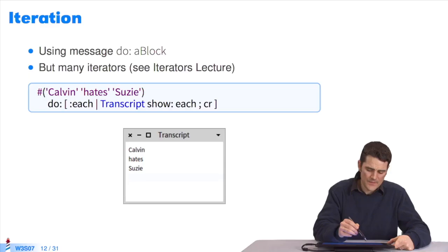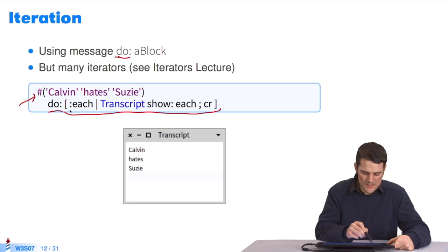You can browse the elements of a collection by using the message DO:, for instance. This is a collection to which I'll send the message DO: before passing it a block. The block starts with open bracket and ends with close bracket. The block's parameter is called EACH. It is separated from the block's body by a pipe. With each loop, the value of EACH is the collection's first element, then the second, etc. And on the transcript you have, Calvin hates Susie.